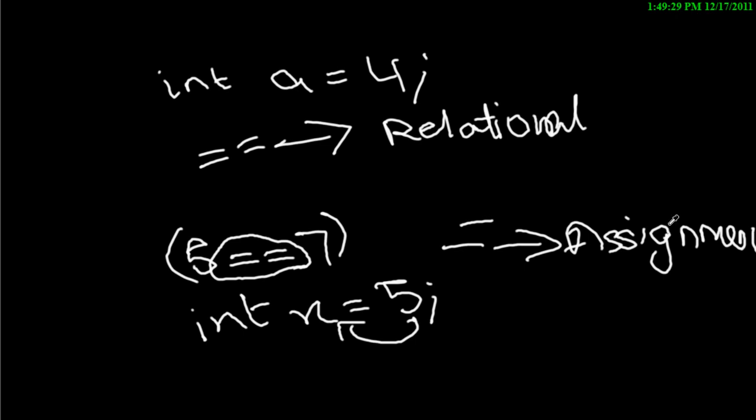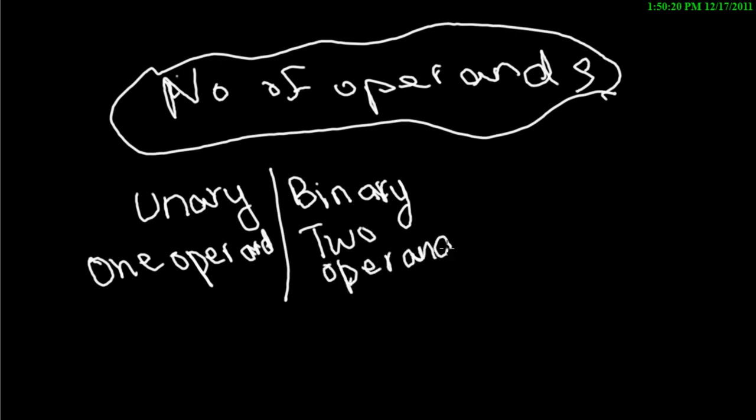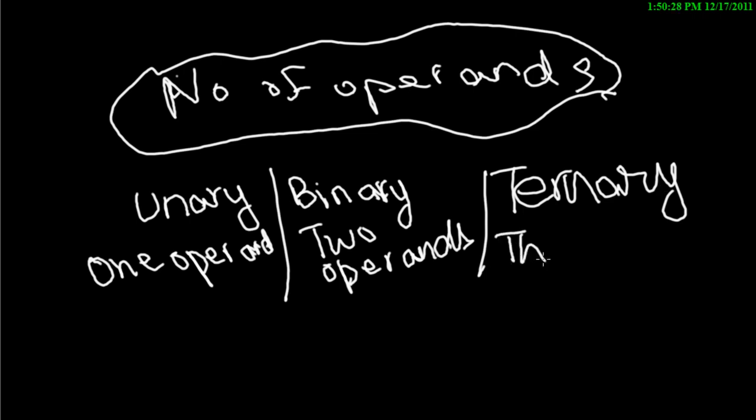Now let's look at how operators are divided based on the number of operands — operands being the things an operator performs its job on. There are three categories: unary, which means one operand; binary, which means two operands; and ternary, which means three operands.